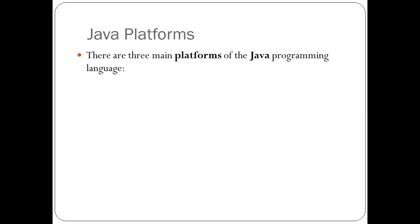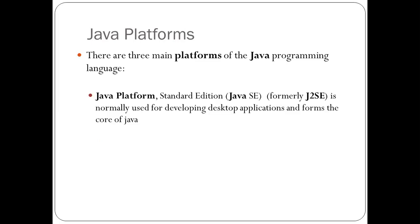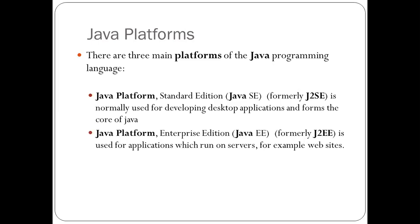There are three main platforms of the Java programming language. Java Platform Standard Edition, known as Java SE, is used for developing desktop applications and forms the core of Java. Java Platform Enterprise Edition, Java EE, formerly known as J2EE, is used for applications which run on servers, for example websites.